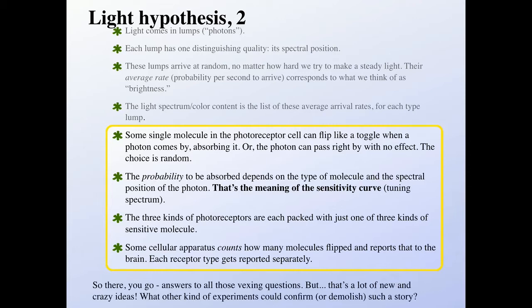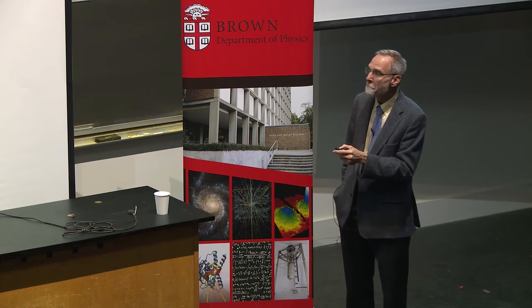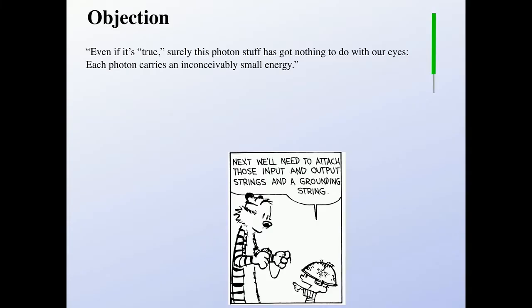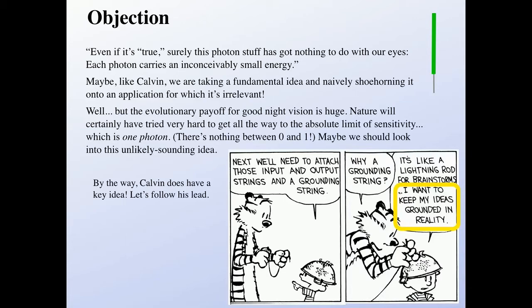Sometimes it catches it. Sometimes it misses it. The probability to be absorbed depends on what kind of molecule and what kind of photon went by. If the sensitivity curve of that molecule matches where that photon is in the spectrum, then there's a high probability of catching it, and if it doesn't match, then there's a low probability. I'm continuing with my idea of spinning out some ideas that seem to reconcile the upsetting new data with the old things that we thought we understood. Okay, so I got the meaning of the spectrum of arriving light. I got the meaning of the sensitivity curve. It's a probability for photon capture. The three kinds of photoreceptors are each packed with just one of three kinds of light-sensitive molecule. And when I say packed, I mean there's a hundred million of them in one photoreceptor cell. Some cellular apparatus is then tasked with the job of counting how many molecules flipped per unit time, and that's what gets reported to the brain. I haven't proved any of that to you. That's my hypothesis.